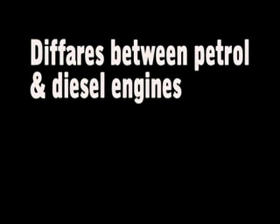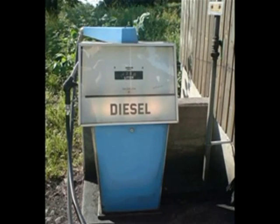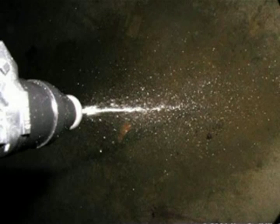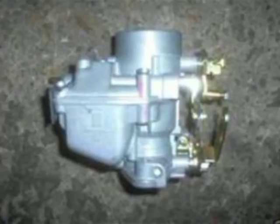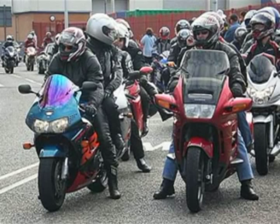Differences between petrol engine and diesel engine: In the petrol engine, fuel used is petrol, whereas in the diesel engine fuel used is diesel. A spark plug is used in the petrol engine, whereas a fuel injection pump is used in the diesel engine. A carburetor is present in a petrol engine but absent in a diesel engine. A mixture of air and fuel is taken during the inlet stroke in the petrol engine, whereas only filtered air is taken in the diesel engine. Petrol engines are less efficient compared to diesel engines.